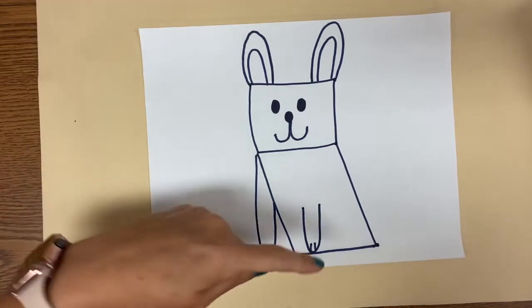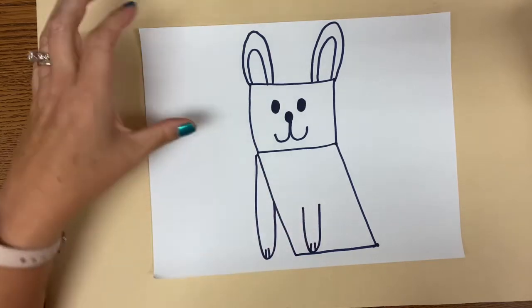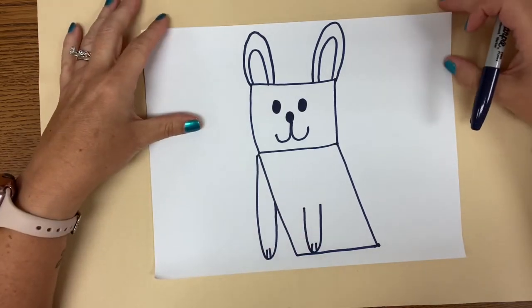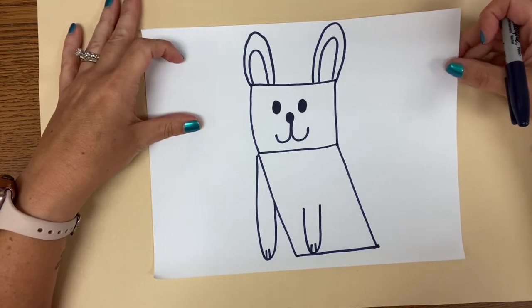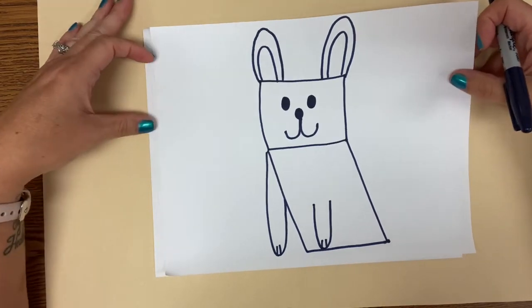He's sitting down, so you're just going to see his front two paws. You won't see his back two paws in the drawing. I'm going to use Sharpie to draw with. You can go ahead and use pencil so that you can erase and fix as you need to.